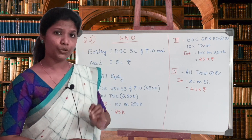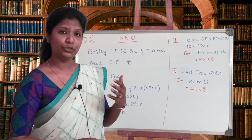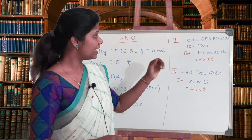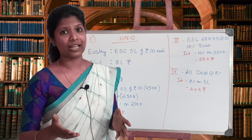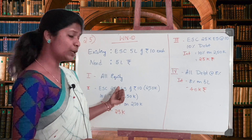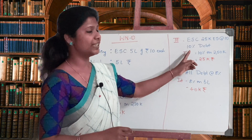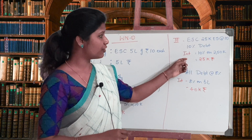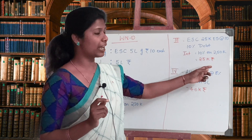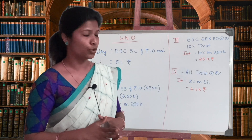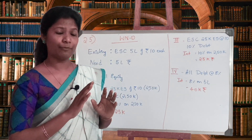If I subtract from 5 lakh, the balance is 2 lakh 50,000 rupees, which is a combination of debenture. So plan 3 is a combination of equity and debenture, at a rate of interest of 10 percent. I calculate interest: 10 percent on 2 lakh 50,000 — not on 5 lakh — which gives 25,000 rupees.